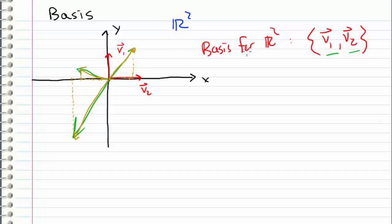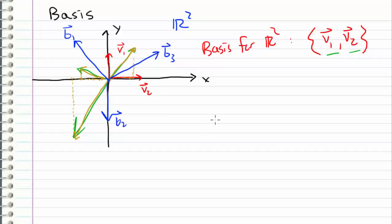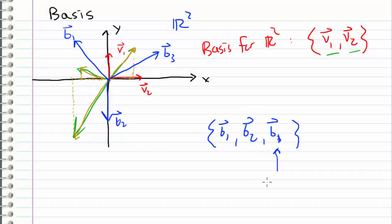This isn't the only basis for R2. A basis can be any set of linearly independent vectors that span the space. For example, I can take two other vectors b1 and b2 as a new basis — they are linearly independent and there are two of them, so they span R2 and satisfy the criteria. But if I add a third vector b3, the set {b1, b2, b3} is not a basis because b3 is linearly dependent with b1 and b2, making the set too large.